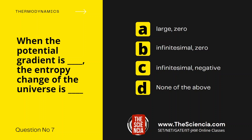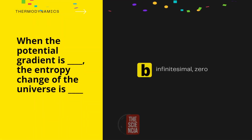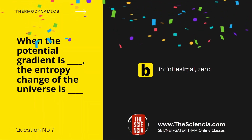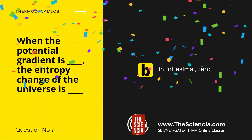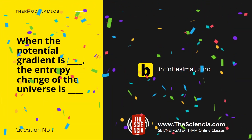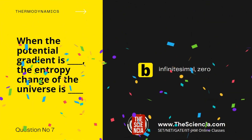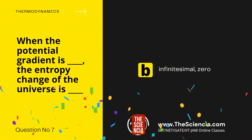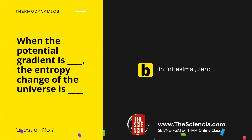The correct answer is Option B — when the potential gradient is infinitesimal, the entropy change of the universe is zero.